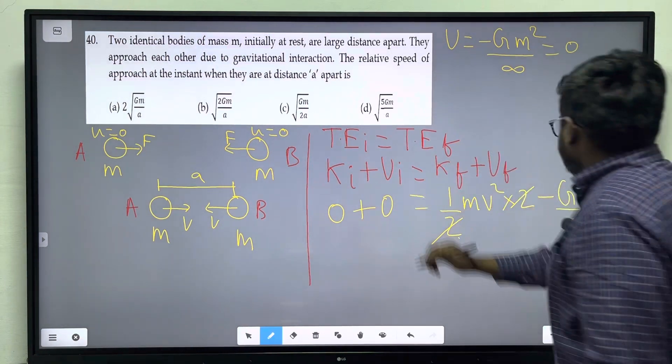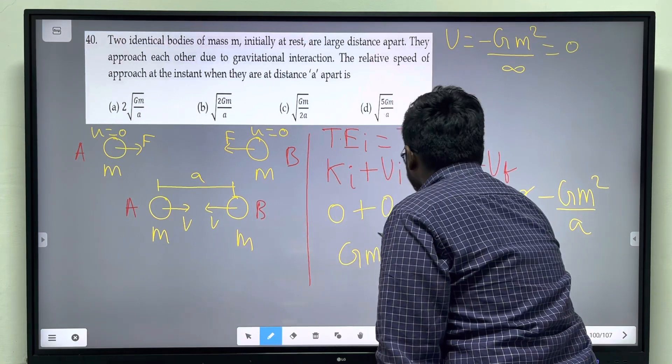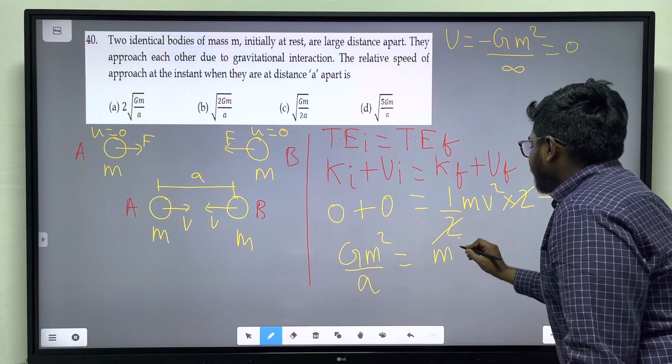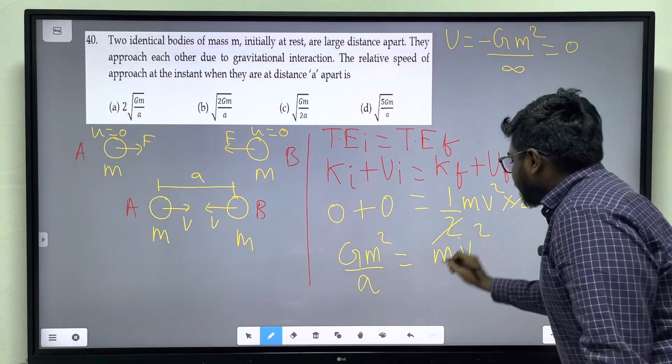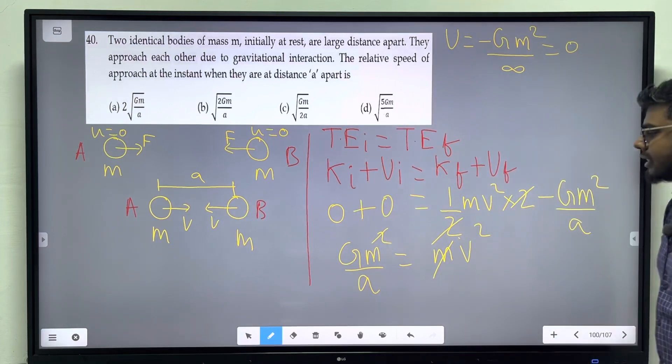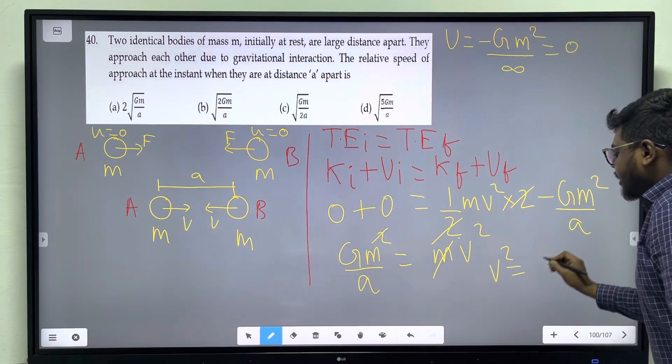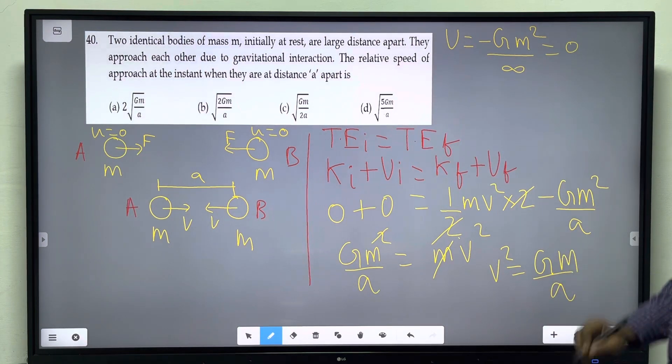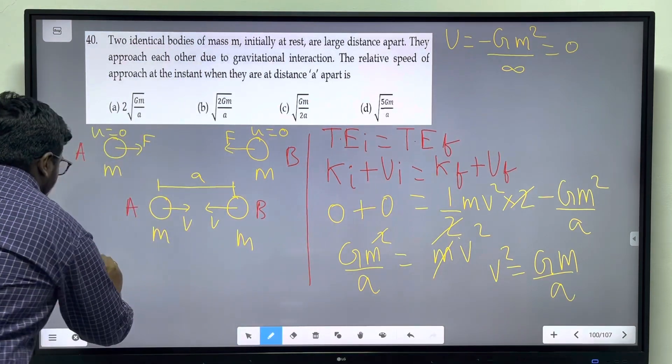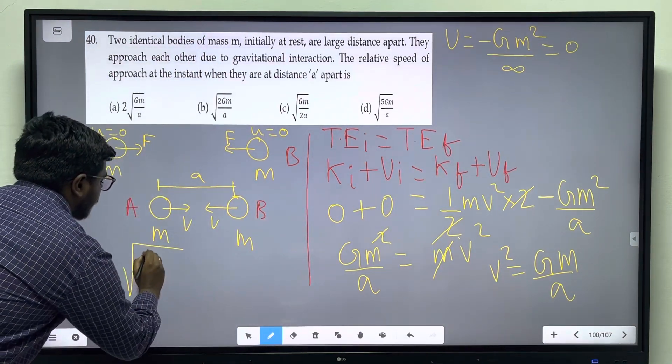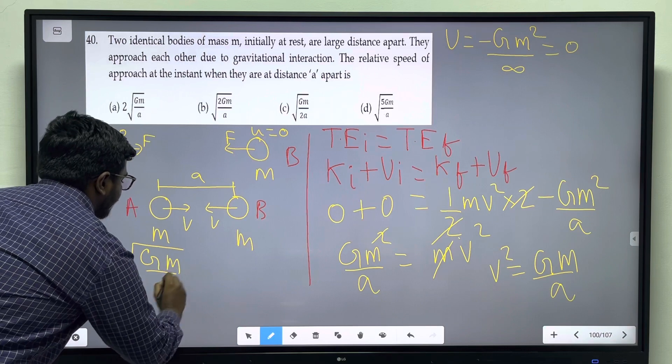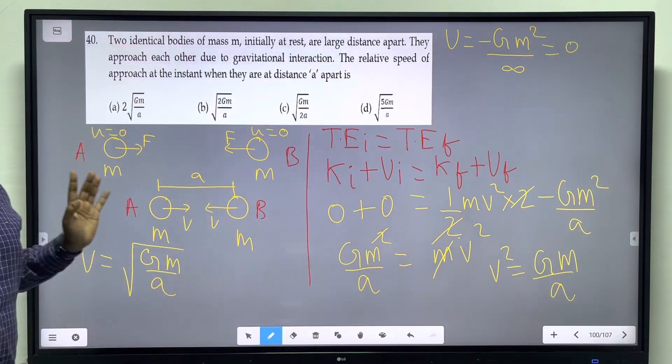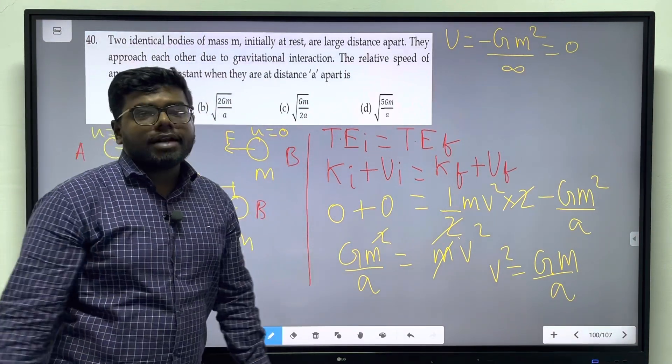The minus term on the side. G M square divided by A equal to M V square. That means, number one. The answer is V square. In the system, first phenomena.